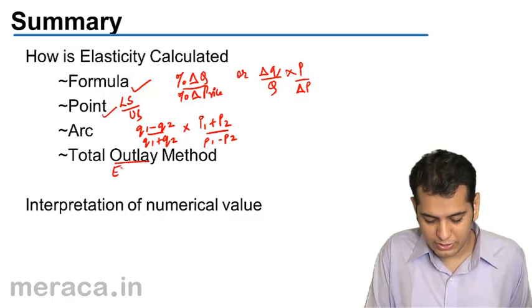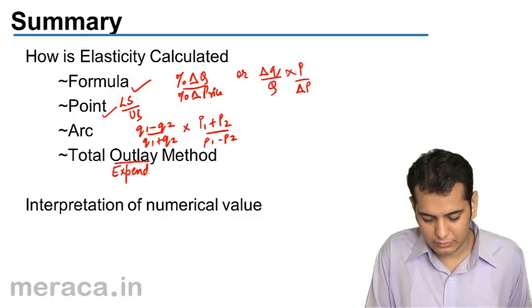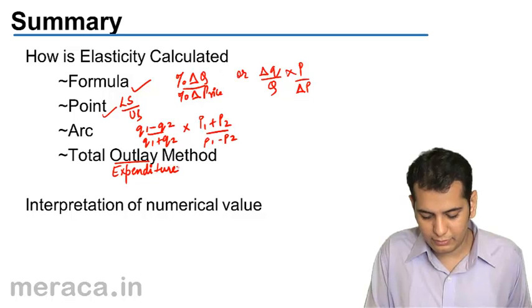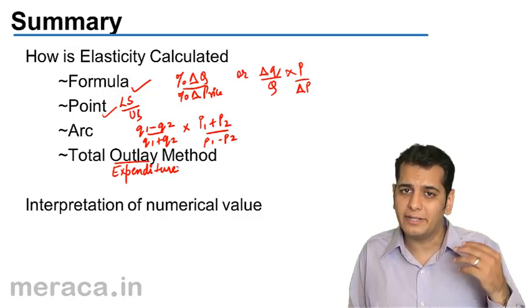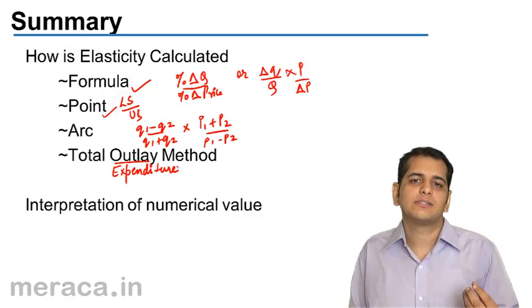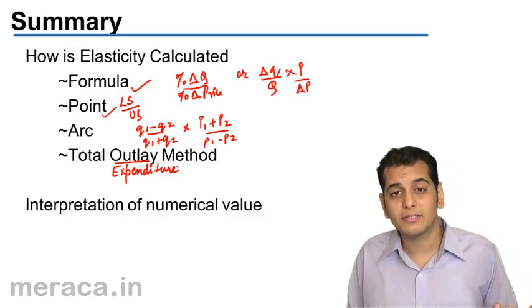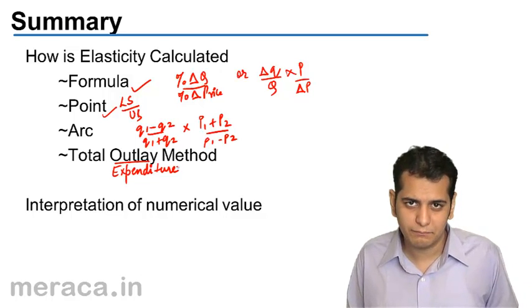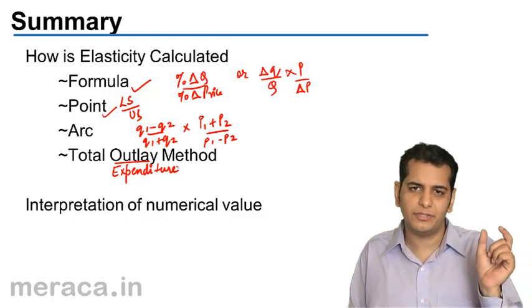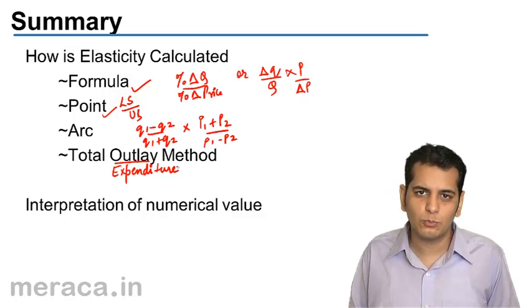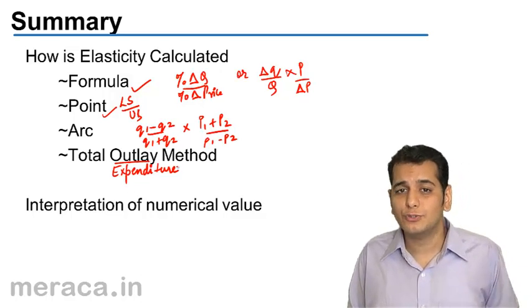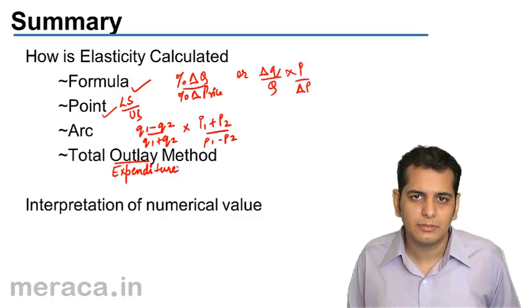When the total outlay increases, we say the elasticity of demand is greater than one or elastic. When the total outlay remains constant, we say the elasticity of demand equals one or it is unitary elasticity.